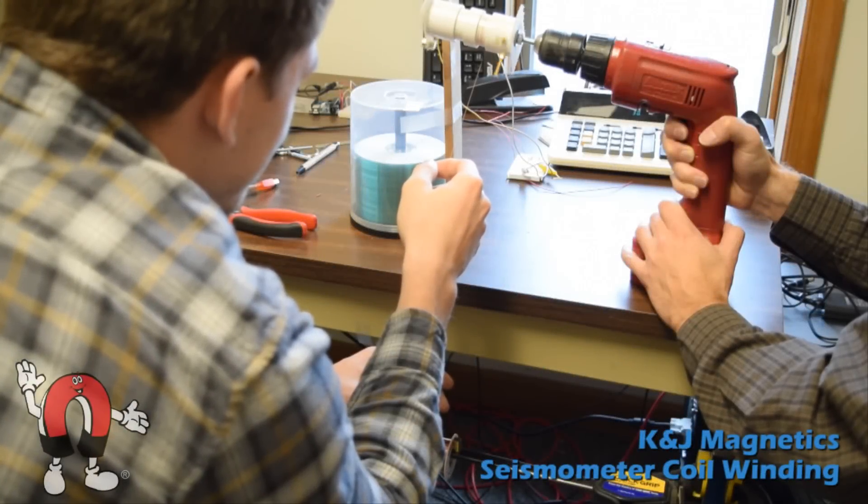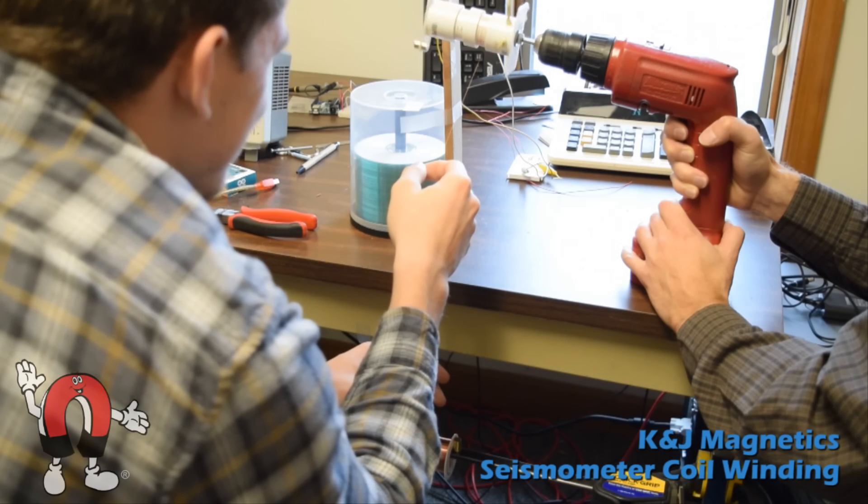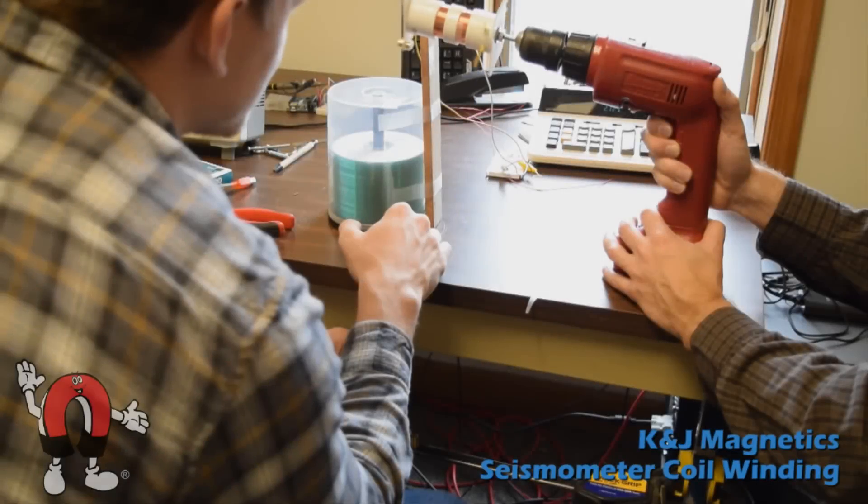This is how we started winding a coil of magnet wire for the K&J seismometer. We used a section of pipe to hold the wire and spun it with a drill.